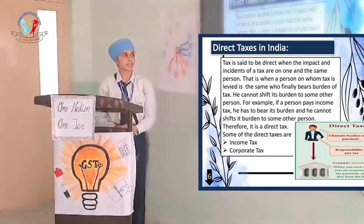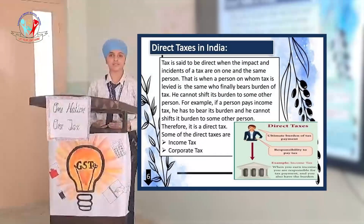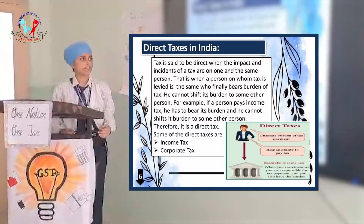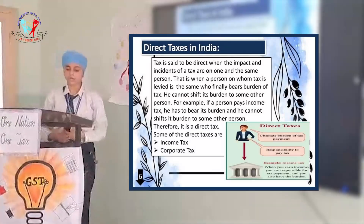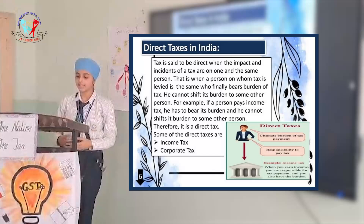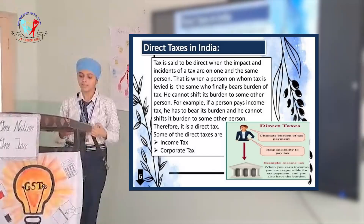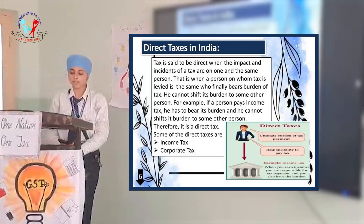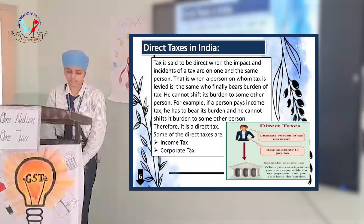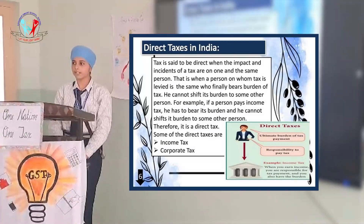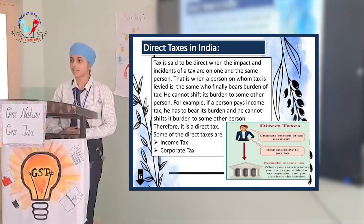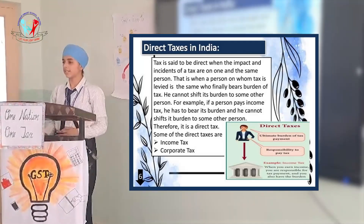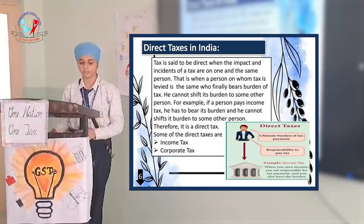Taxes are called direct when the impact and incidence of the tax fall on one and the same person — that is, when the person who pays the tax is also the one who ultimately bears the tax burden and cannot shift that burden to any other person. For example, if a person has to pay income tax, he will bear the burden himself and cannot shift it to anyone else.